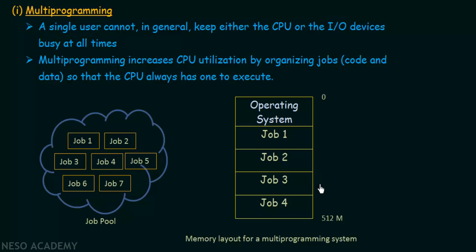In multiprogramming, the CPU does not remain idle. Whenever a particular job does not want to use the CPU, it can be utilized by another job — making it a very efficient system. We can relate this to everyday life: a lawyer who has different clients doesn't take care of only one client at a time. When one client's case is waiting for trial or paperwork, he takes care of another client, utilizing his time and resources efficiently. That is what we do in multiprogramming — utilizing our CPU efficiently.